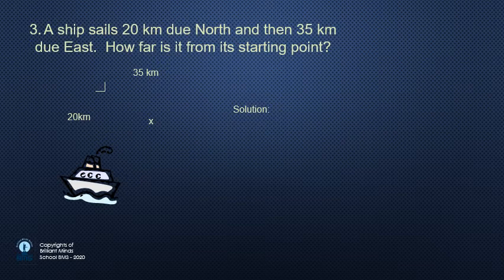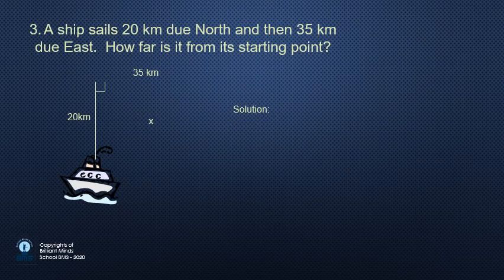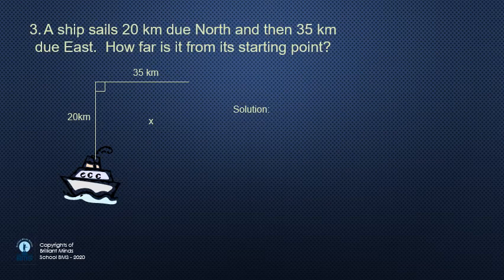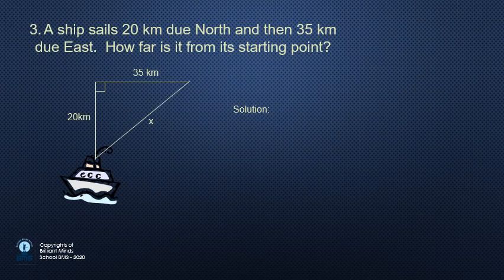Let us try to think about this example. A ship sails 20 km due north and then 35 km due east. How far is it from its starting point? How can we calculate it? Yes, the distance between the ship and north is 20 km, and from east 35 km.